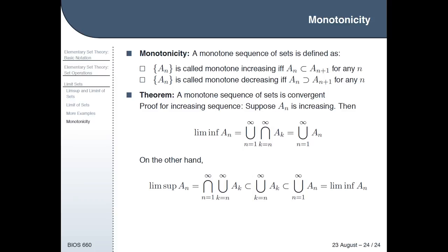The reason we care about this is that it's a special case of the monotone convergence theorem. This is mainly for the benefit of doctoral students — the monotone convergence theorem, among other things, says that when you have a sequence of sets or functions that is monotone increasing or decreasing, you can do things like take derivatives inside a summation sign or inside an integral sign. Master's students can basically ignore this; doctoral students will need to learn it at some point, likely in a course on measure theory.